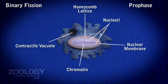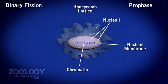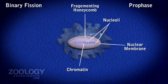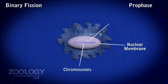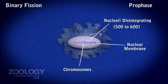During prophase, amoeba withdraws its pseudopodia and becomes almost rounded. Cytoplasm loses its transparency to a large degree and the contractile vacuole disappears. The honeycomb-like lattice underneath the nuclear membrane first fragments and then disappears. The nucleoli also disintegrate, and more than 500 very small chromosomes emerge in the central nucleoplasm.